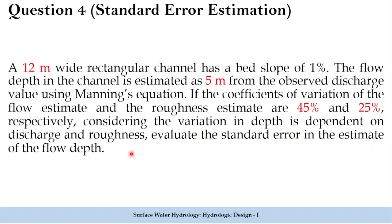Let us solve another problem estimating standard error. A 12-meter wide rectangular channel has a bed slope of 1 percent. The flow depth is estimated as 5 meters from observed discharge using Manning's equation. The coefficients of variation of the flow estimate and roughness estimate are 45 percent and 25 percent respectively. Considering variation in depth is independent of discharge and roughness, evaluate the standard error in the estimate of flow depth.